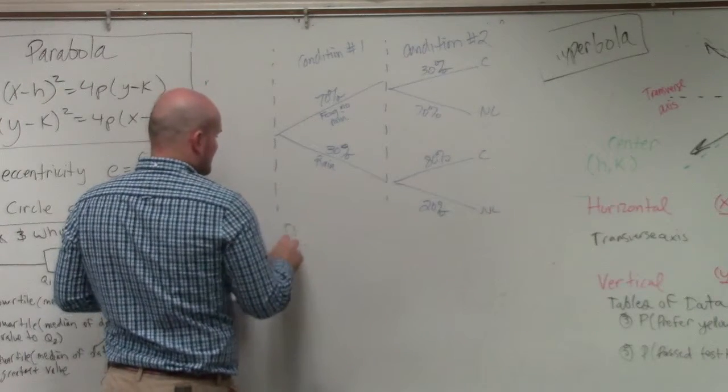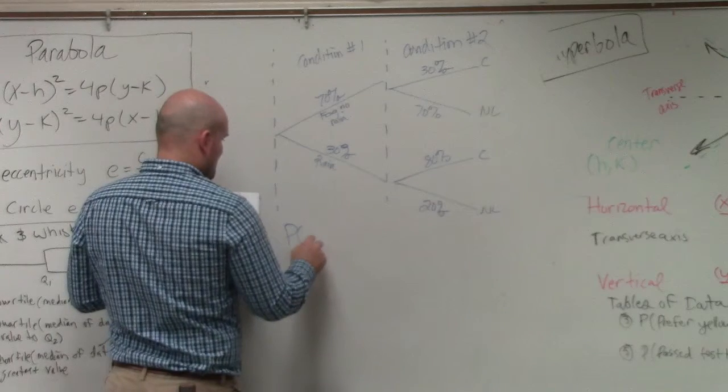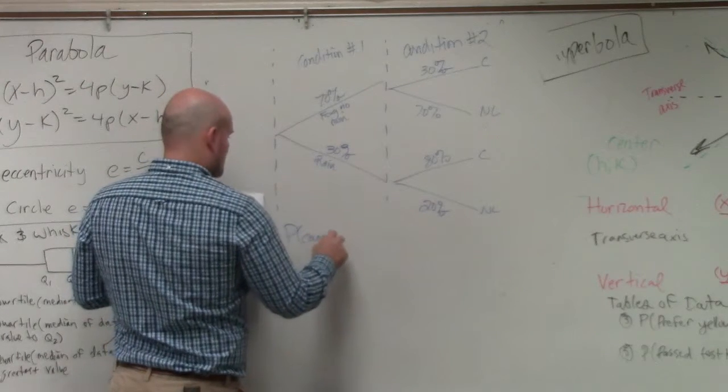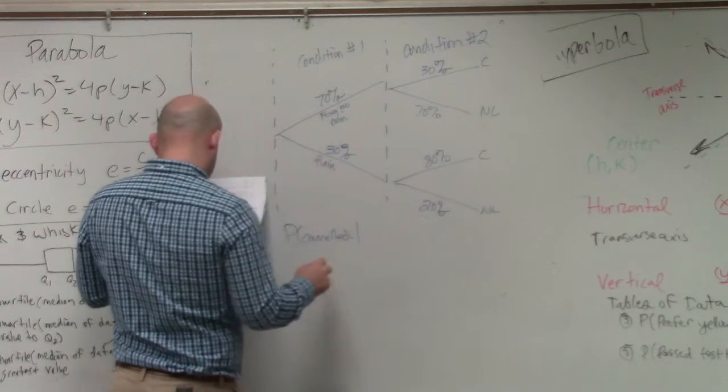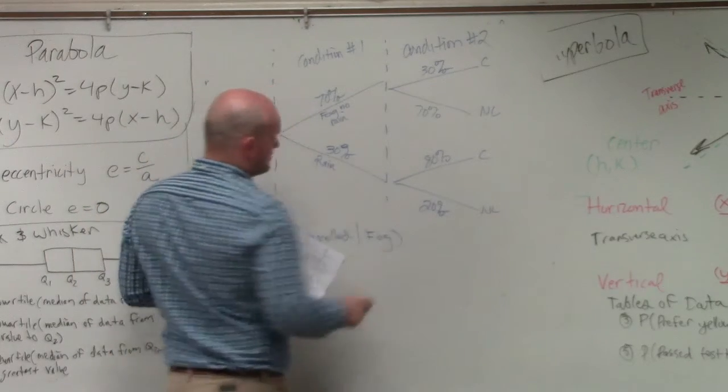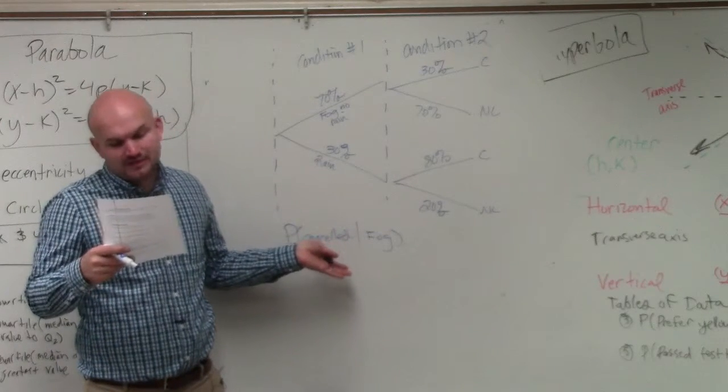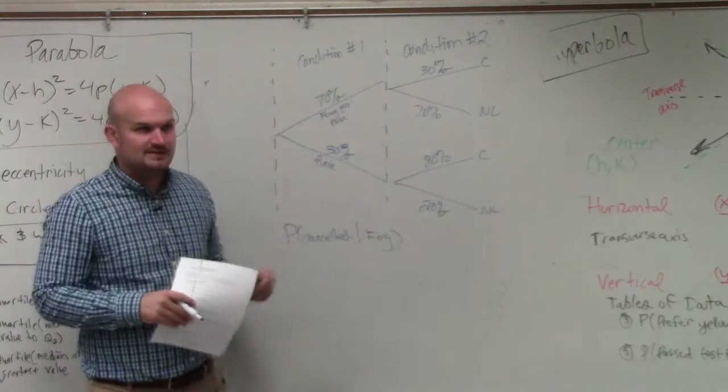So basically, what we're asking is, find the probability that the game will be canceled such that there will be fog, such that there is fog. That's basically what they're asking, or that is what they're asking. Find the probability that there will be fog and the game will be canceled.